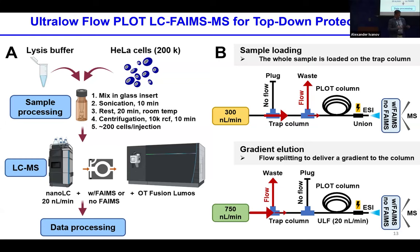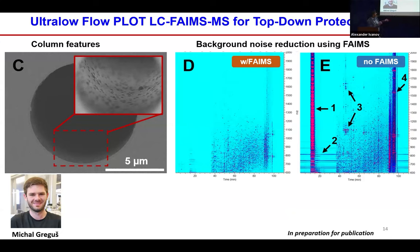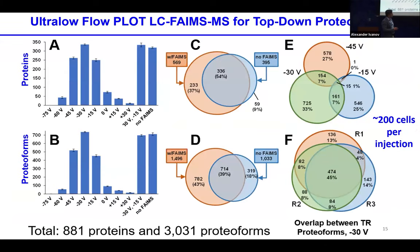We polymerize PLOT columns — one meter long, four meter long, different geometries — and we try to inject intact cells, lyse them right there on a trap column and analyze later. We also tried the FAMES interface, which is not real ion mobility but rather an ion mobility filtering device. We checked whether we can improve signal-to-noise, remove singly charged ions and background noise. It worked for top-down proteomics. Our FAMES helps get about 30–40% more IDs.